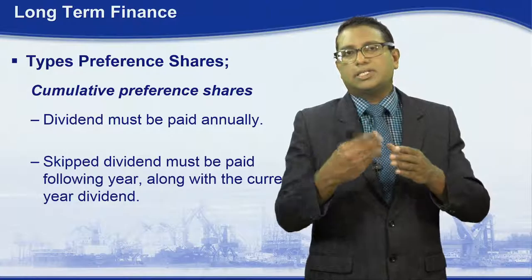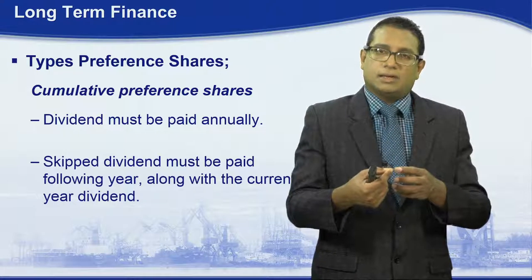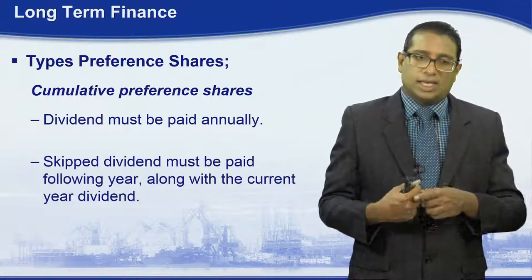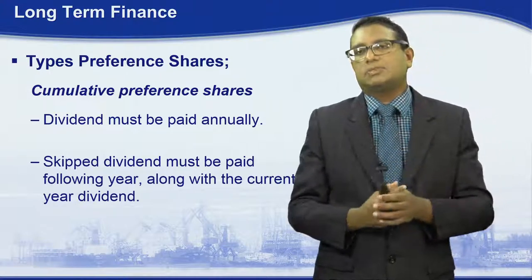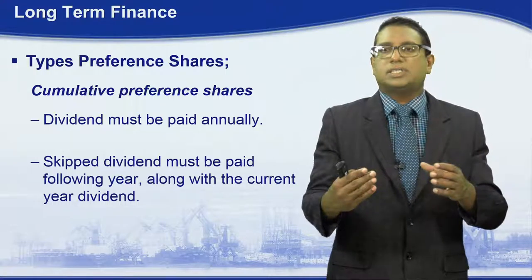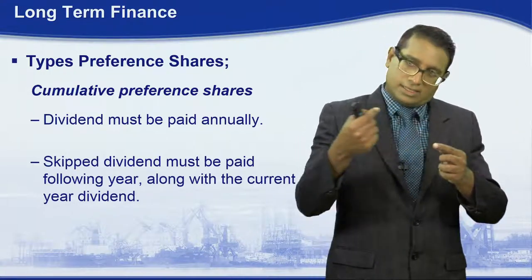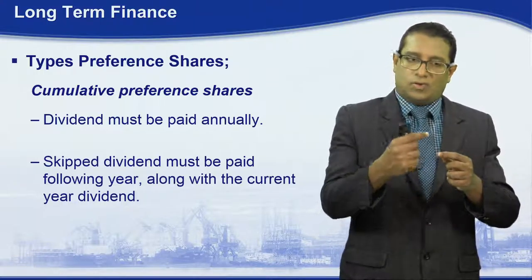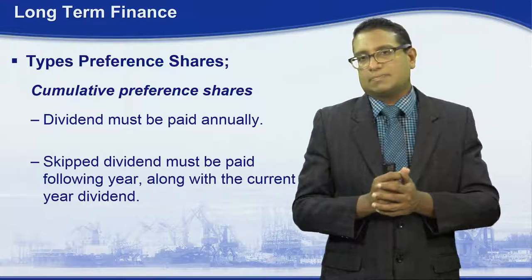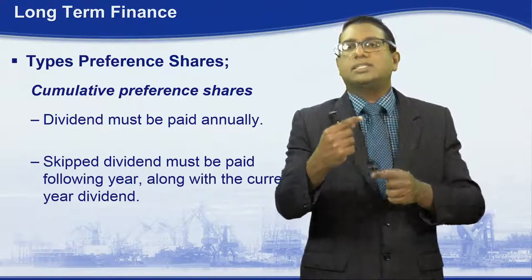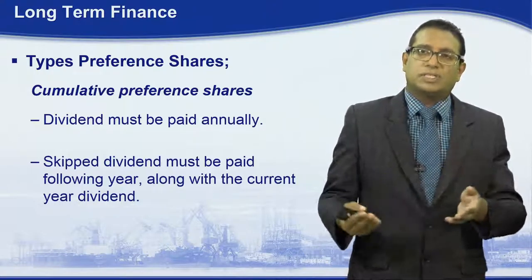For ordinary shareholders, the directors have the discretion of giving a certain percentage of dividend. But when it comes to preference shareholders, there is always a fixed percentage of dividend that has to be paid. In this context, preference shares are more similar to marketable debt, because similar to marketable debt, the percentage of dividend under preference shares is fixed — it is not based on the discretion of the directors.